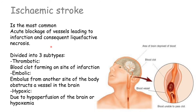An ischemic stroke is divided into three subtypes. You may have a thrombotic stroke, which is when a blood clot forms right on the site of infarction. Or you can have an embolic stroke, where an embolus from another part of the body obstructs a vessel in the brain — an example is a patient with atrial fibrillation, where blood clots form in the atria and are pumped to the brain via the carotids. Or it could be a hypoxic stroke, due to hypoperfusion of the brain or hypoxemia, meaning low levels of oxygen in the blood.